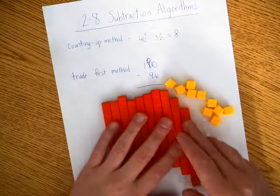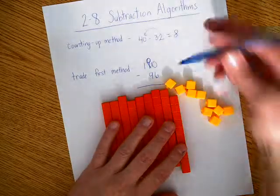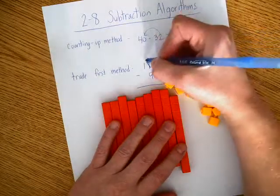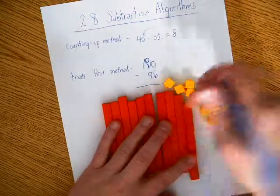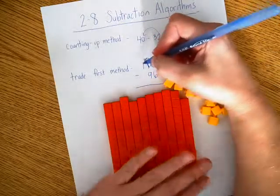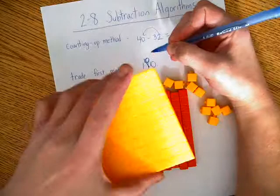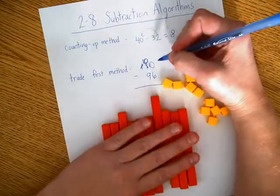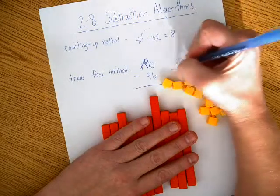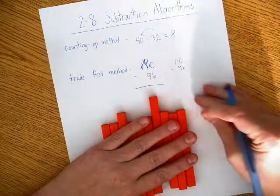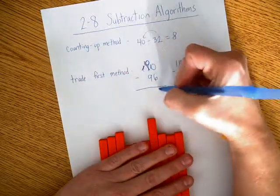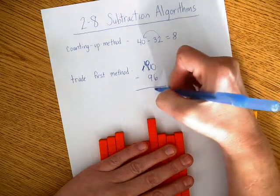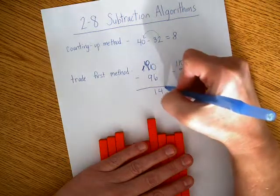And then I'm going to take one away. So I have 10 longs here, and I'm not going to take one of these away. I'm going to take the 100 away. And so then my answer to 110 minus 96, after I did all my trading, would be 10 minus 6 is 4, 10 minus 9 is 1, and my answer would be 14.